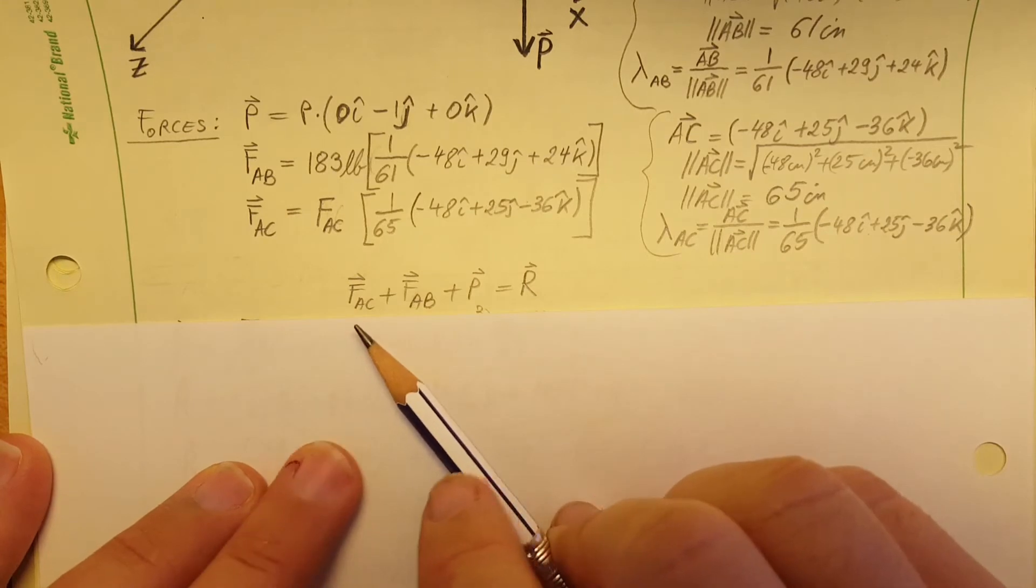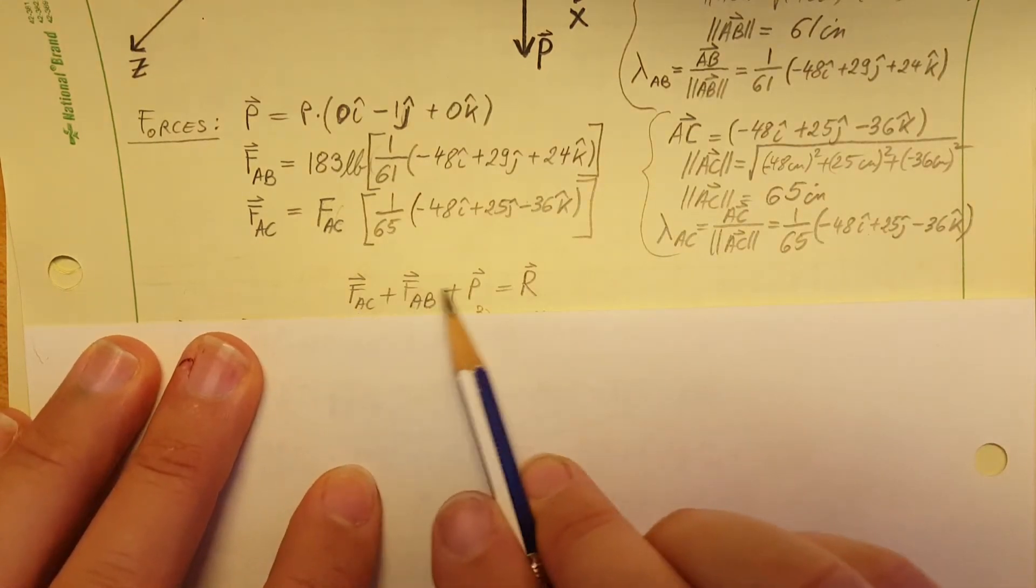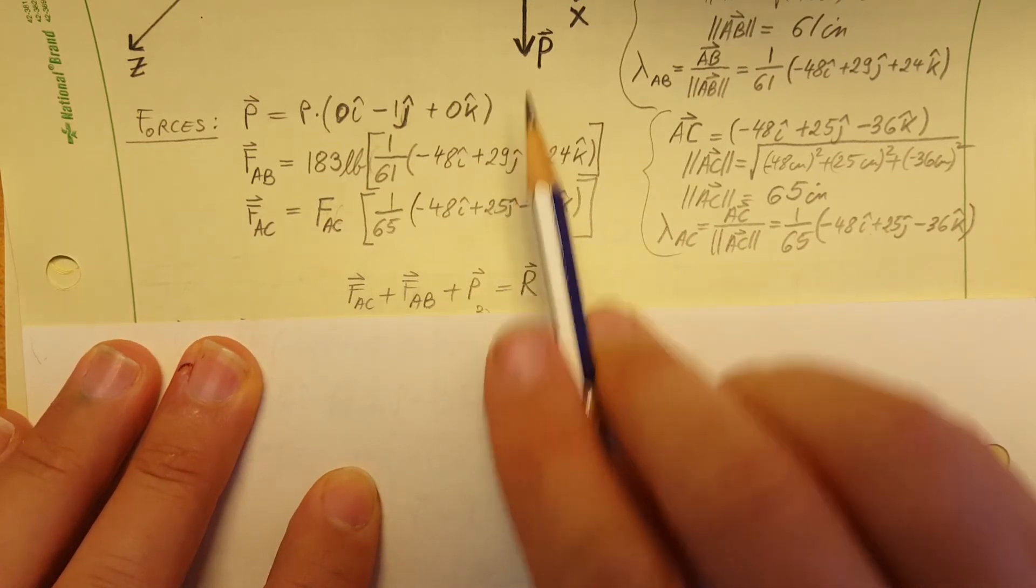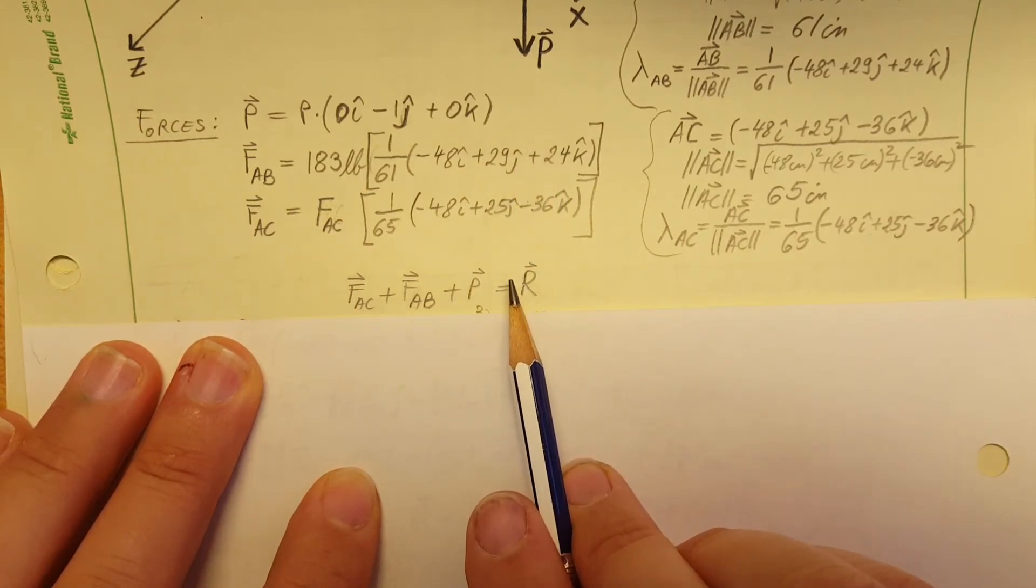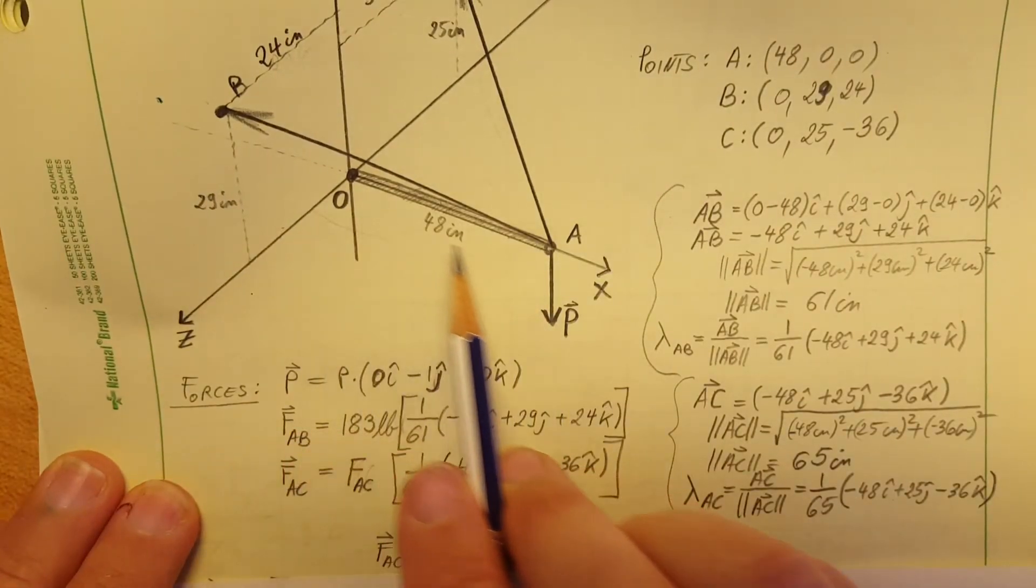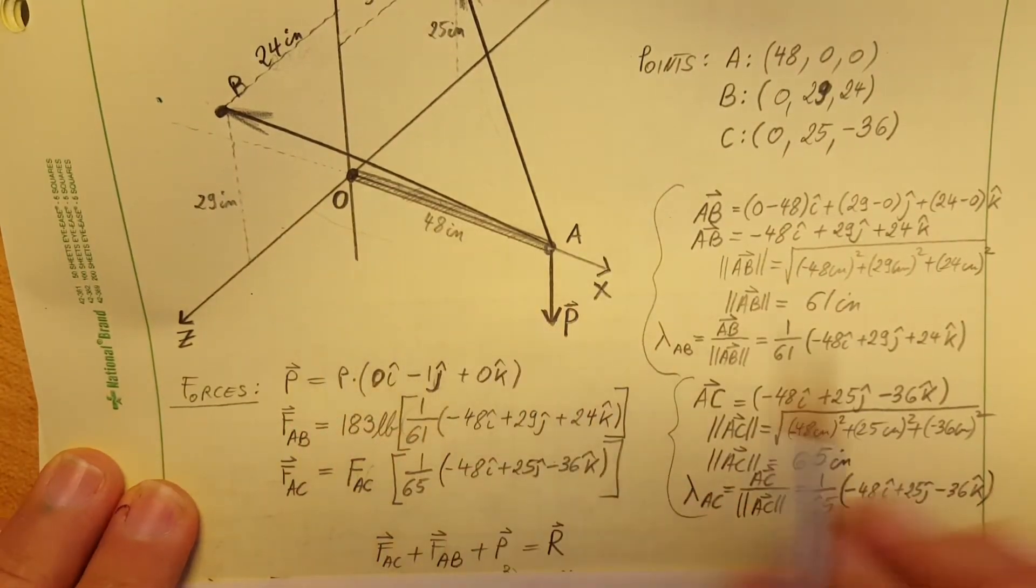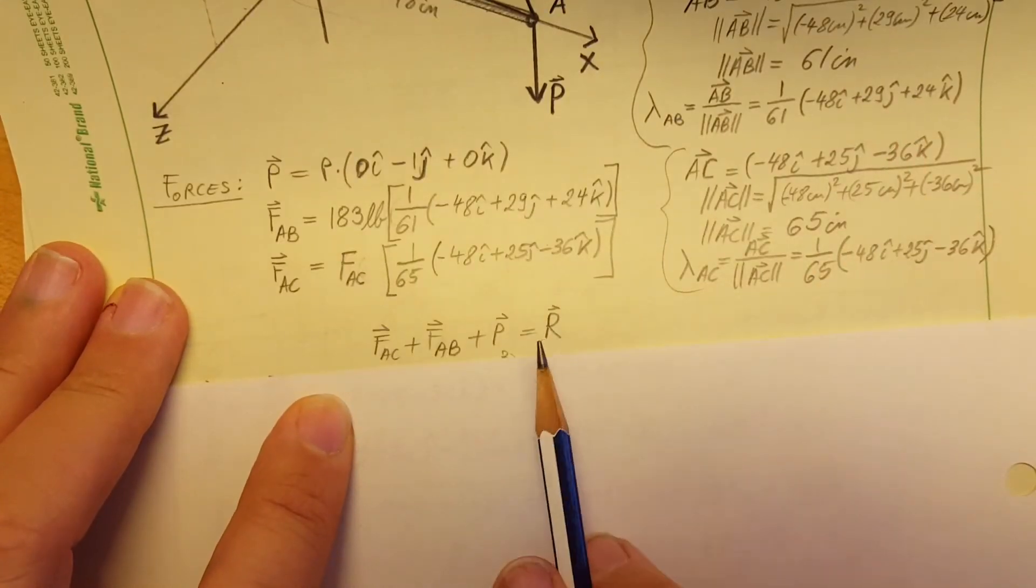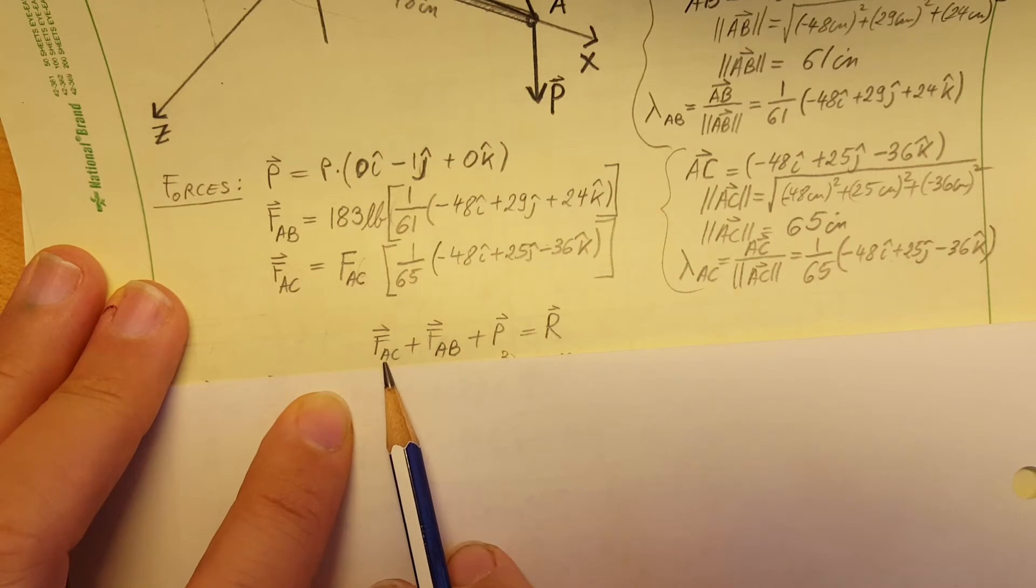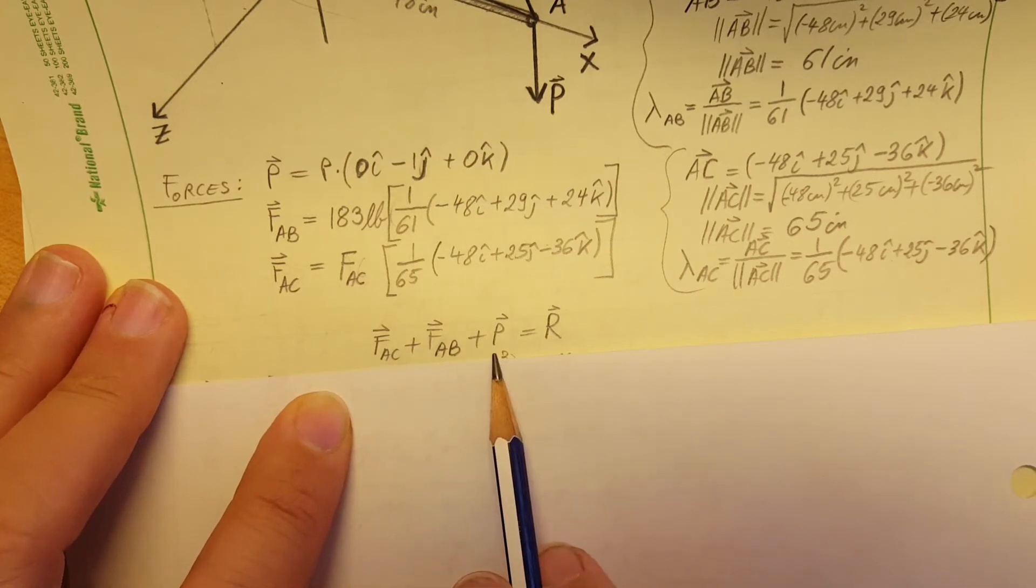Now let's take a look at what we are given. We know that we have a resultant, so we're gonna use that. We know that it's gonna be along vector OA, the boom OA. How do you find the resultant? The resultant is the sum of these three forces: force of AC, force of AB, and P. So that's what we're gonna do.